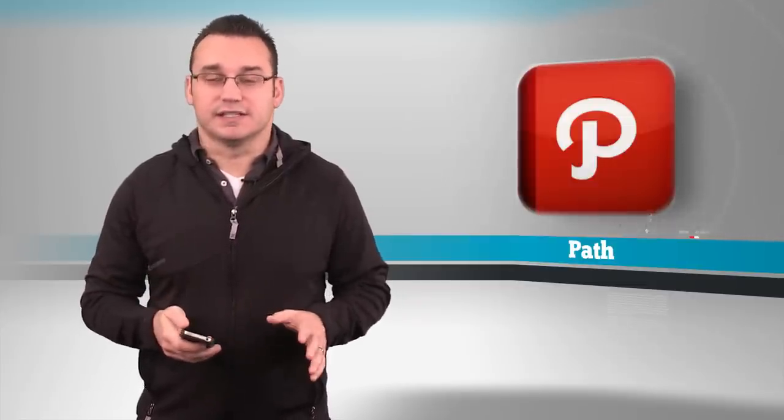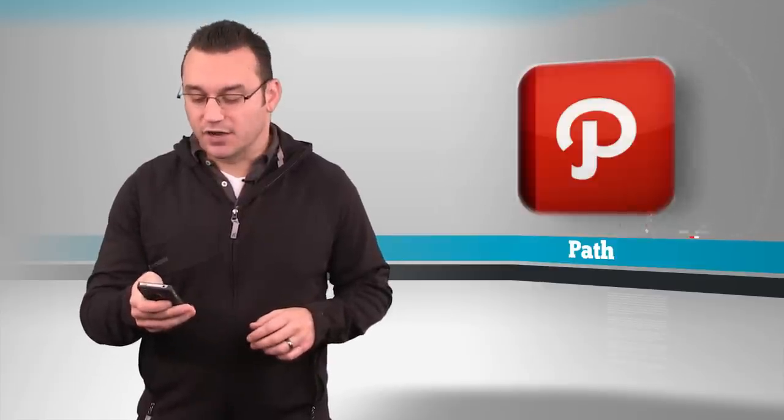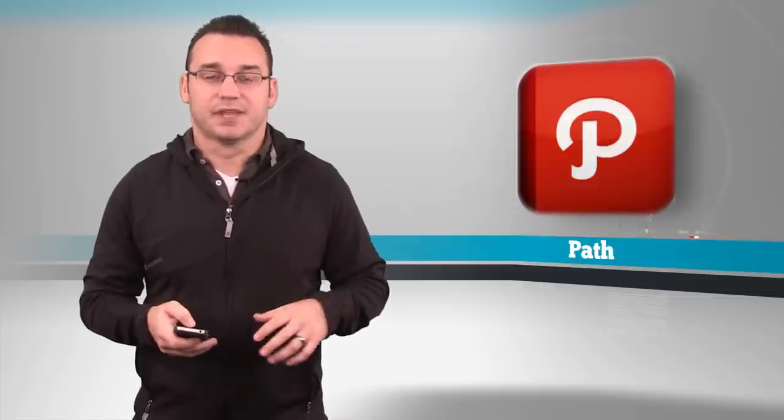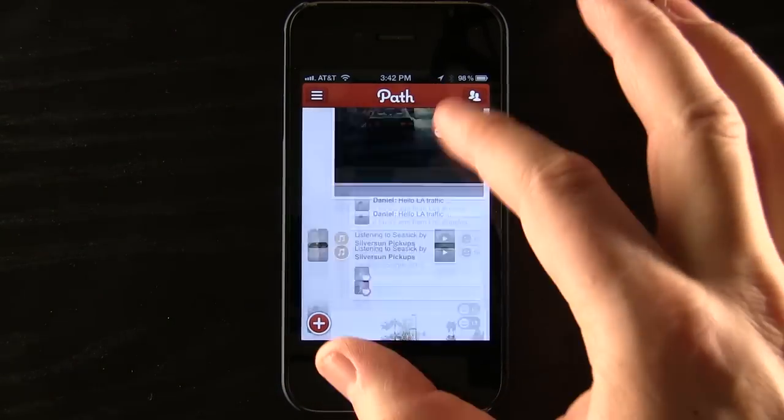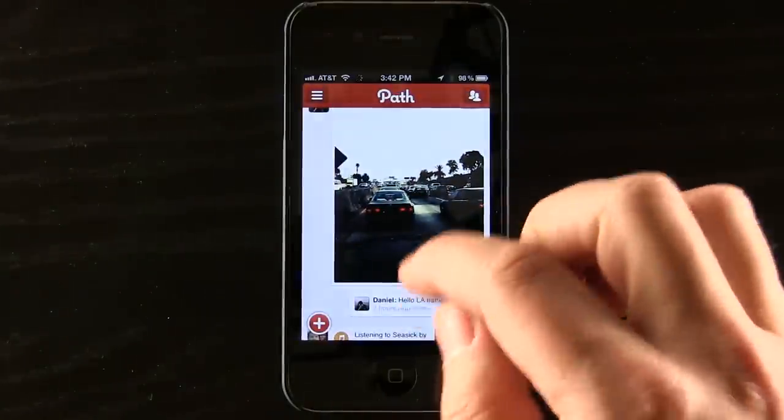So when you load up Path, all you need is a username and a password to set it up and you're ready to go. Your Path is actually a timeline of events that are happening and the people that you friend, their items become part of the path that you can view as well. So you can see what their path is. You can also share your path with them.